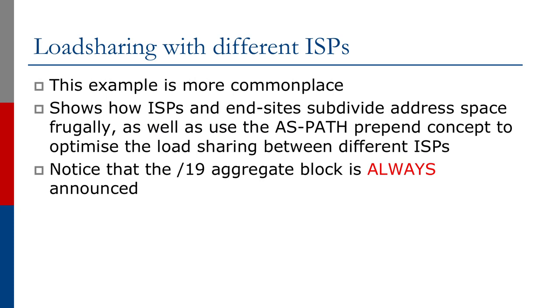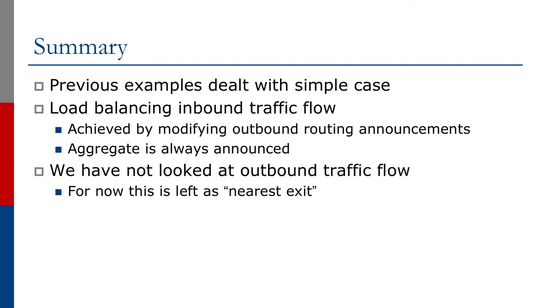This example is much more commonplace and shows how network operators and end sites will subdivide address space frugally, as well as using the AS path prepend concept to optimize load sharing between different ISPs. Notice we're always announcing our aggregate - it's vitally important to ensure the aggregate is always announced on all external links. The previous examples dealt with load balancing inbound traffic flow, achieved by modifying outbound routing announcements. We've not looked at outbound traffic flow - for now we're leaving this as nearest exit, which is sufficient for most end sites. The next part of this series will look at how we balance outbound traffic flow, as that is a little bit more challenging for network operators to achieve.